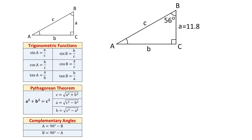All these formulas refer to this right triangle with sides A, B, and hypotenuse C, and with angles A, B, and C. For the sides we use lowercase letters A, B, and C, and for the angles we use uppercase letters. Angle A is opposite of side A, angle B is opposite of side B, and angle C is opposite of side C.